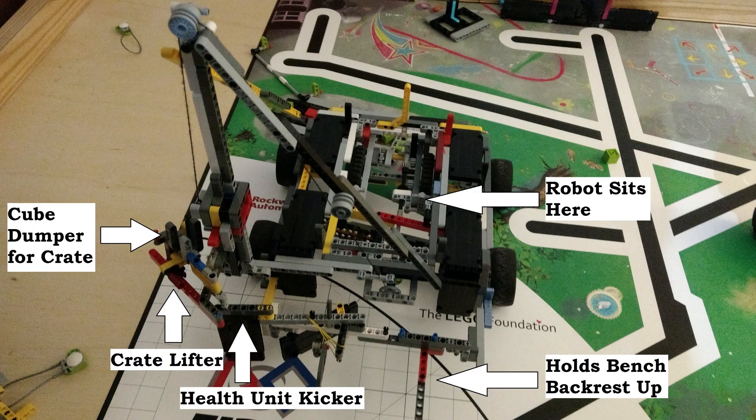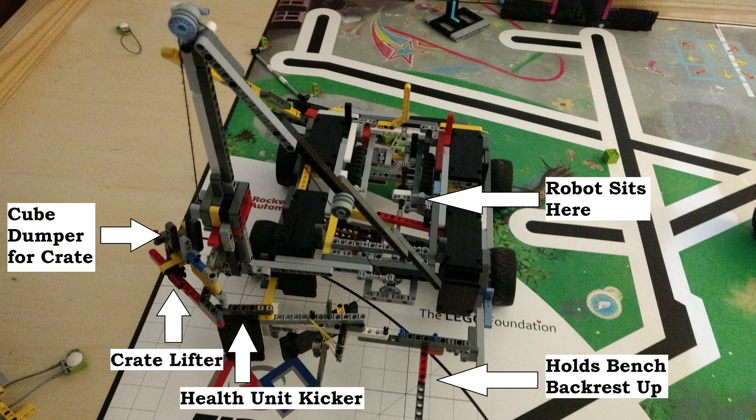Here's the front view of the robot. On the left, there is a secondary cube dumper which puts the cube into the crate of the basketball hoop. There is also the crane lifter, the health unit kicker which puts the health unit from next to the basketball hoop into the home area, a stick that holds the backrest up, and an incline plane that actually lifts the backrest up as well. The robot sits on top of the middle of the attachment.